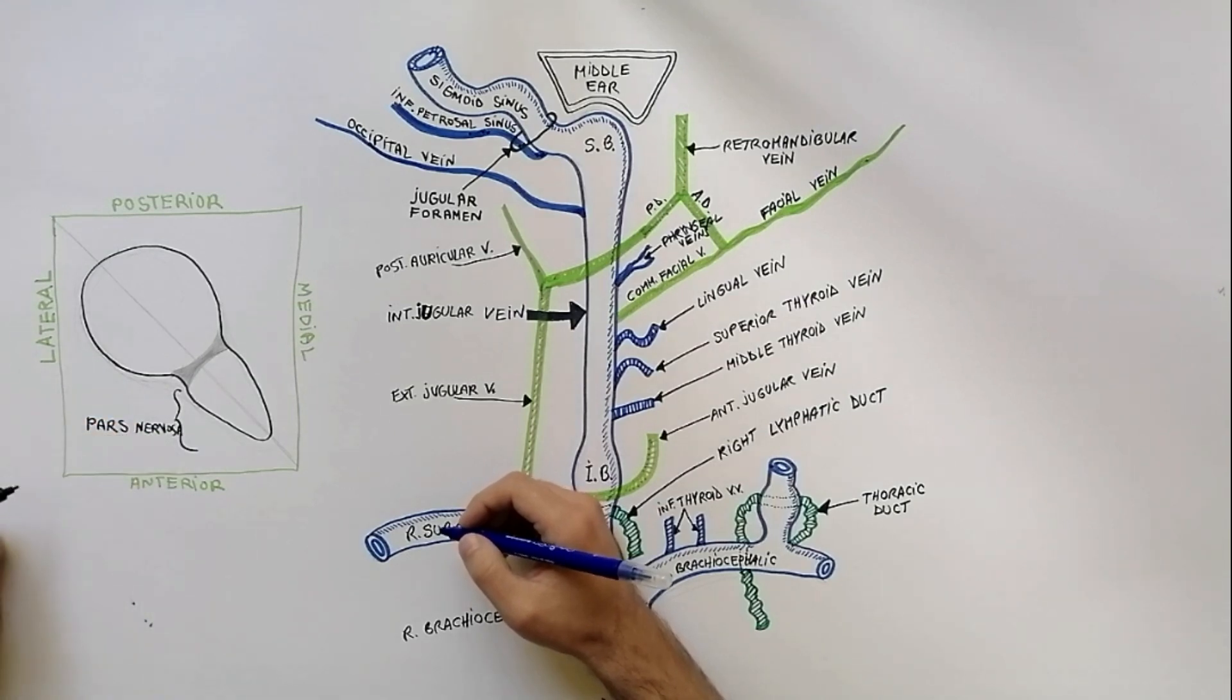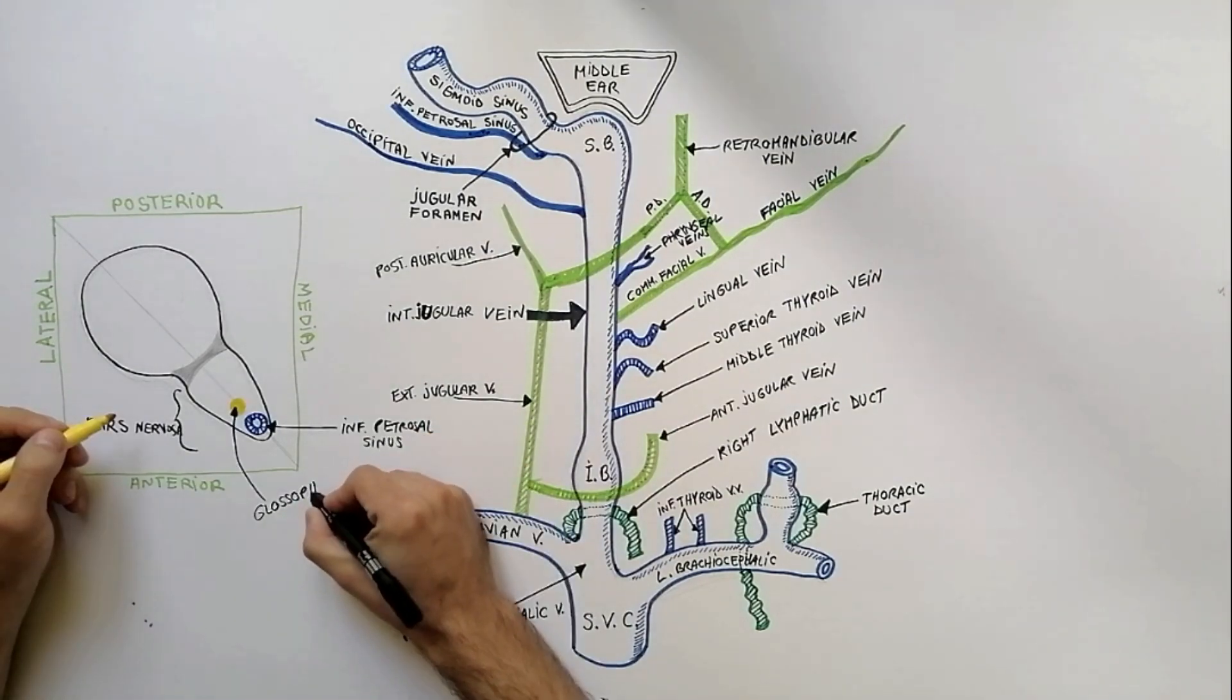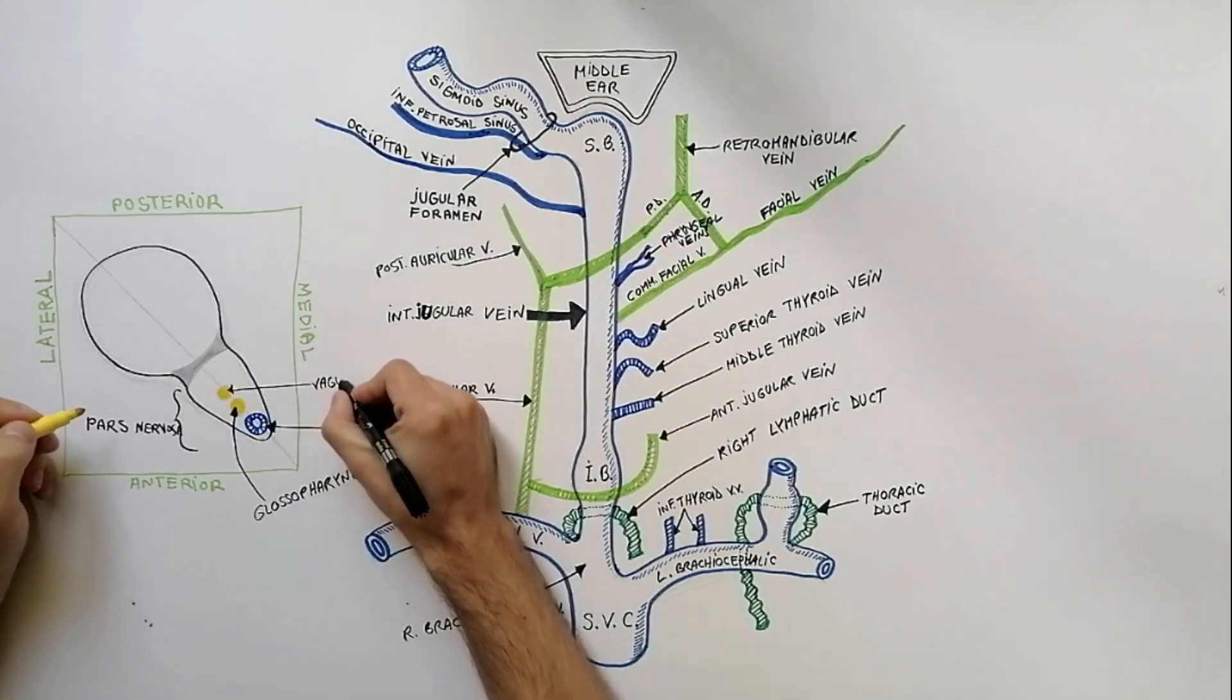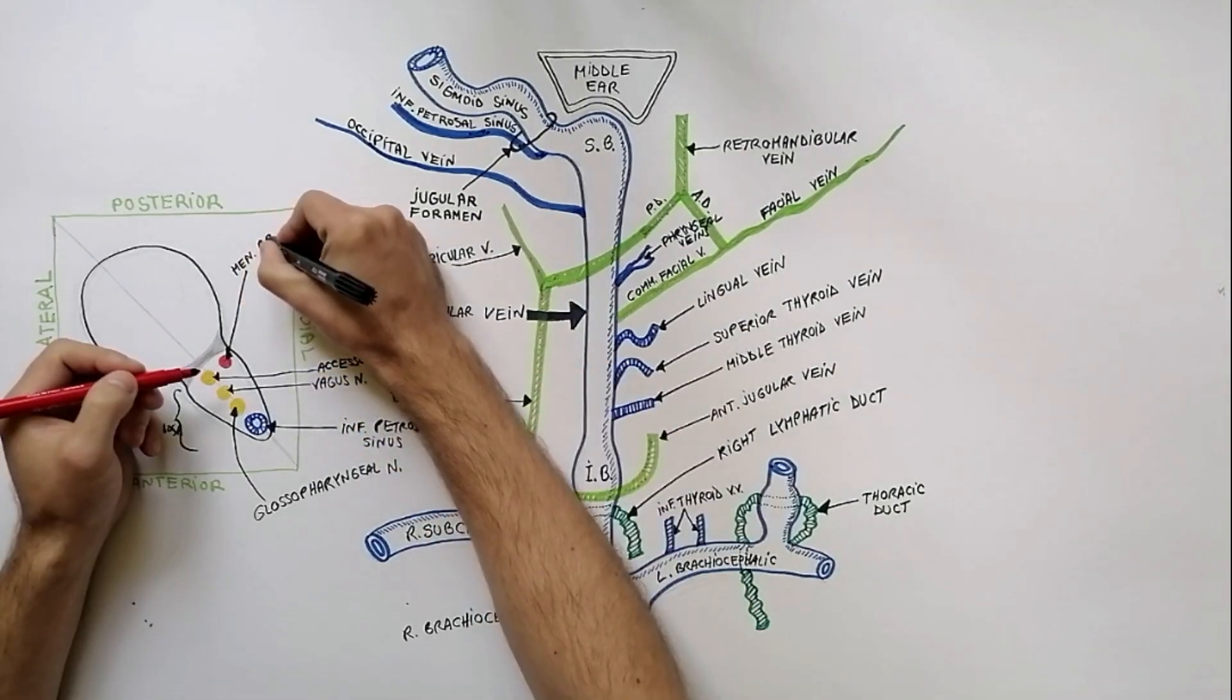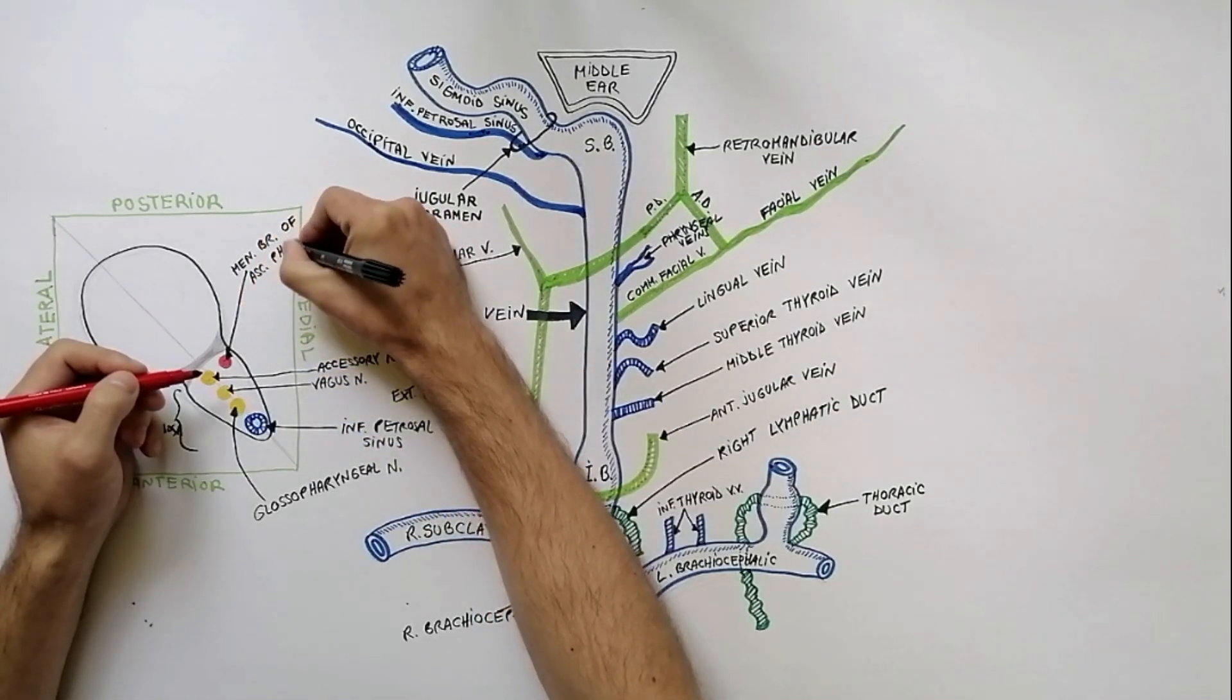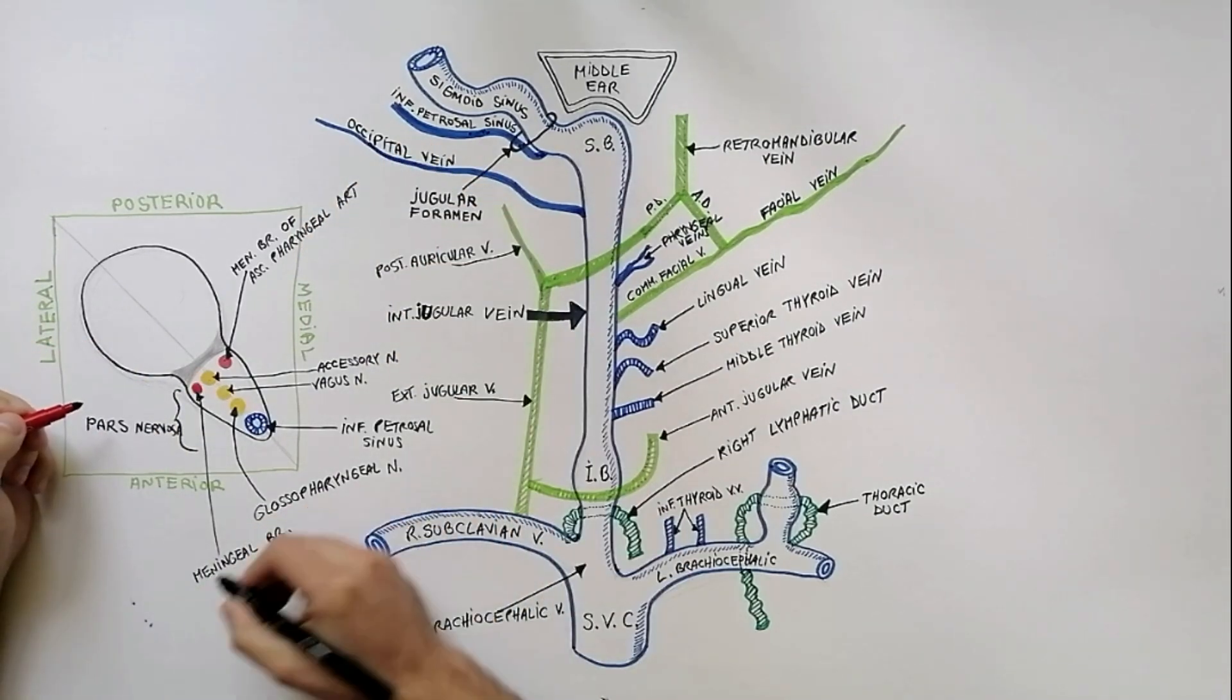contains the following structures: inferior petrosal sinus, glossopharyngeal nerve, vagus nerve, accessory nerve, meningeal branch of ascending pharyngeal artery, and meningeal branch of occipital artery.